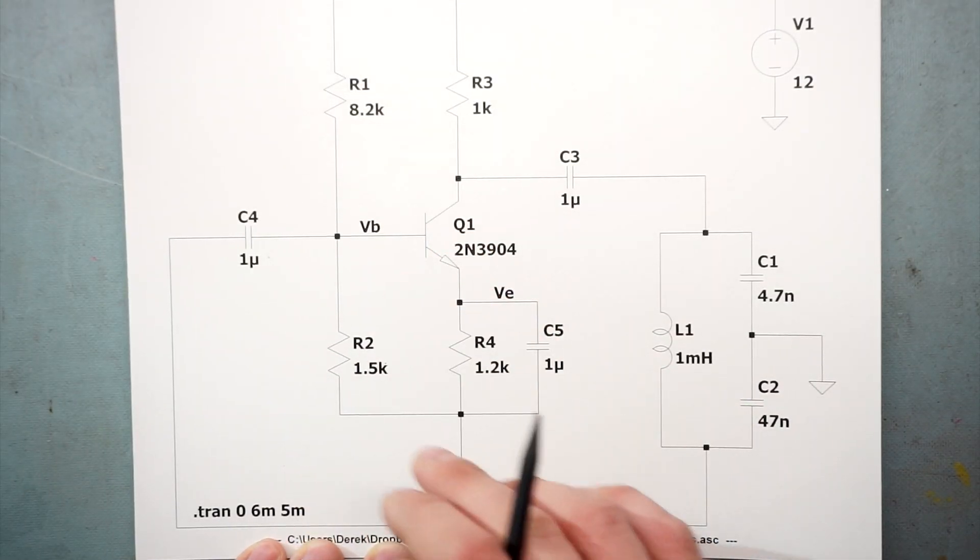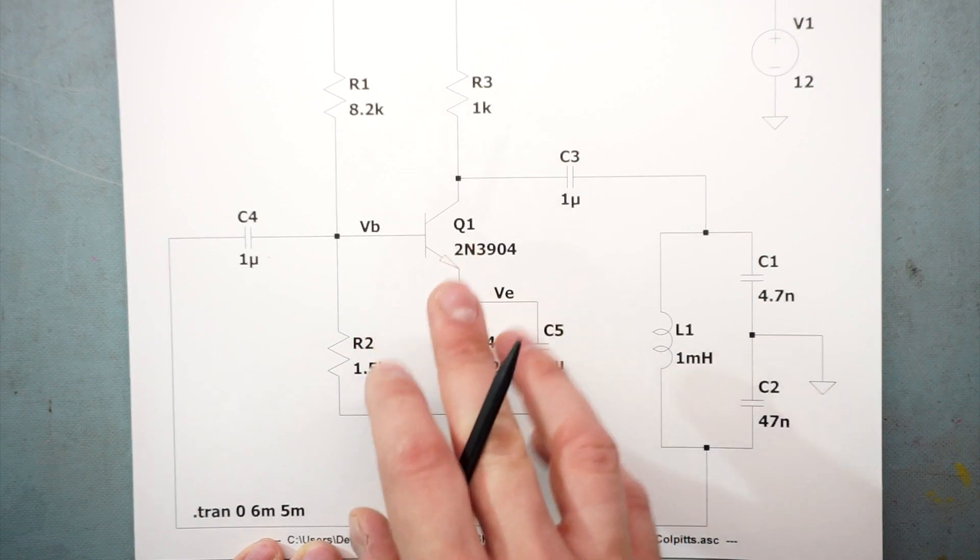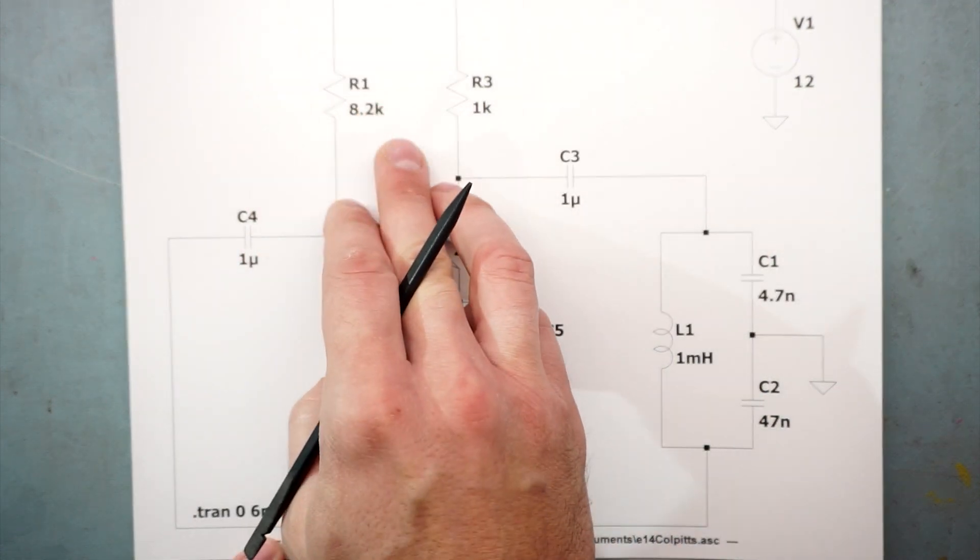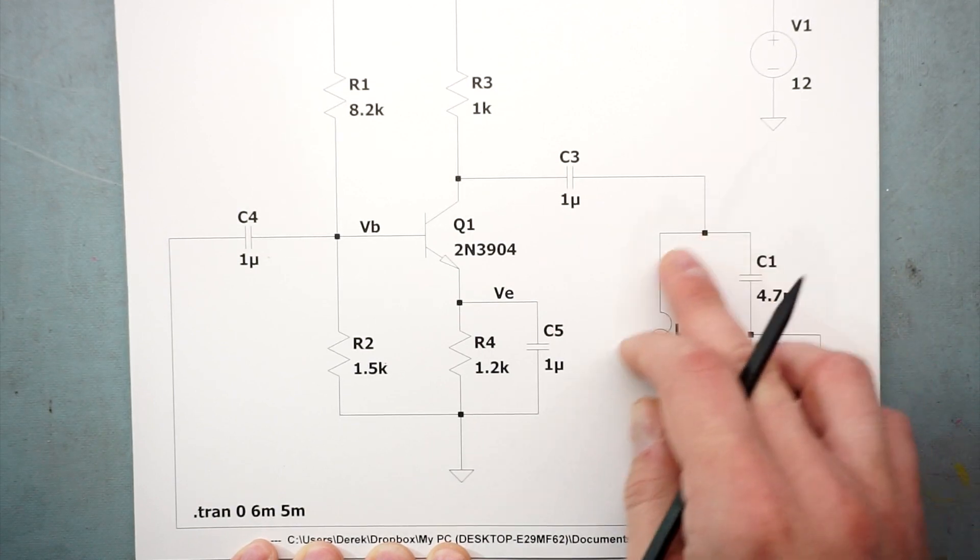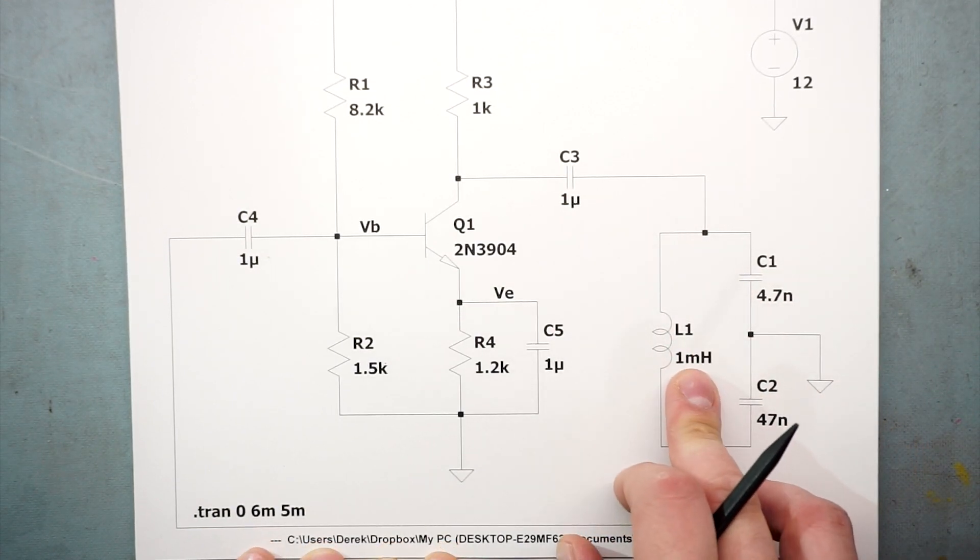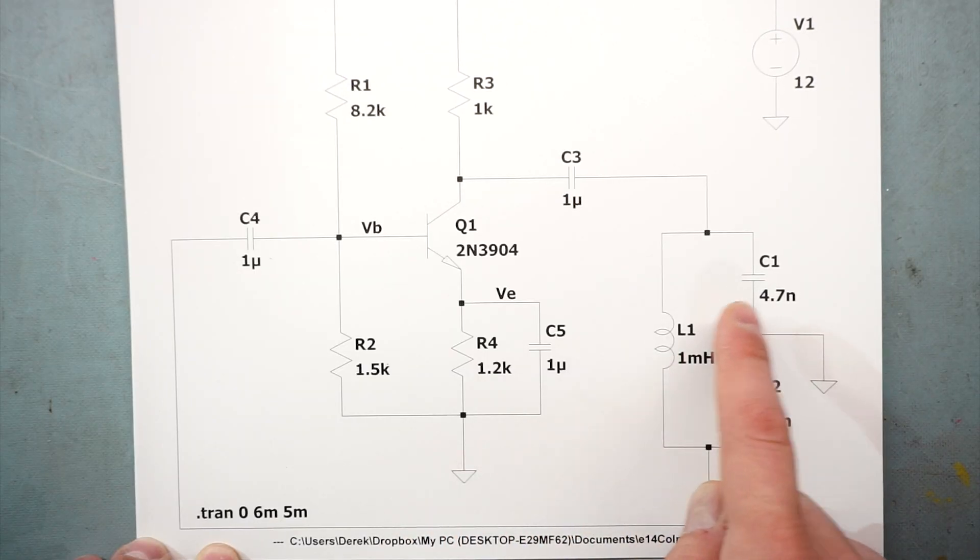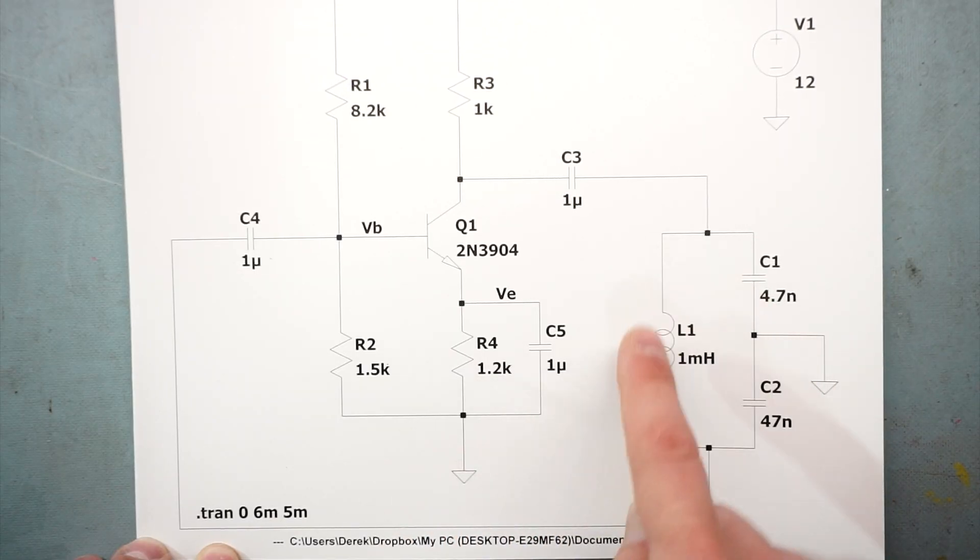Here is a schematic view of what we're going to build today. To satisfy our Barkhausen criteria, we have an amplifier that's going to provide gain and we have this LC network which is a tank circuit. We have two resistors that provide a voltage bias at the base. We have an emitter resistor which sets the current through this leg of the transistor. And our LC tank circuit - the values of those will determine the resonant frequency.